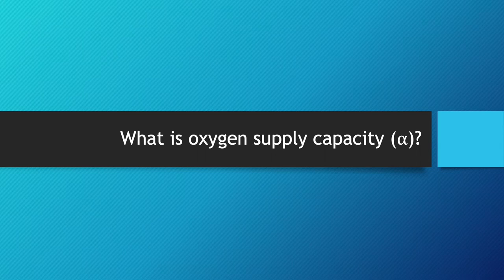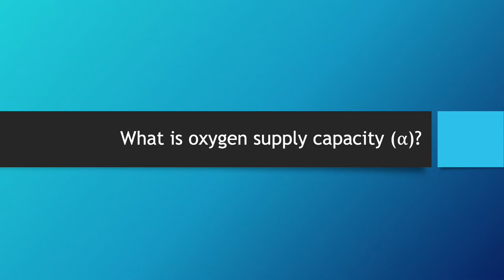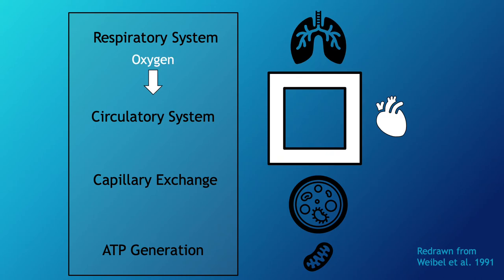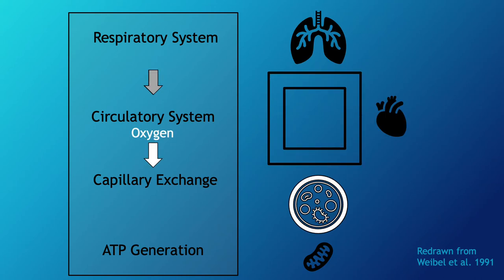We're going to start off by quickly going over a few definitions. First, I'm going to discuss the oxygen supply capacity, which we abbreviate as alpha. Oxygen supply describes the sum of functional and chemical processes that transport oxygen into the cells. In complex organisms, oxygen is extracted from the environment by the respiratory system, circulated around the body, and distributed to individual cells where it is used to generate ATP.